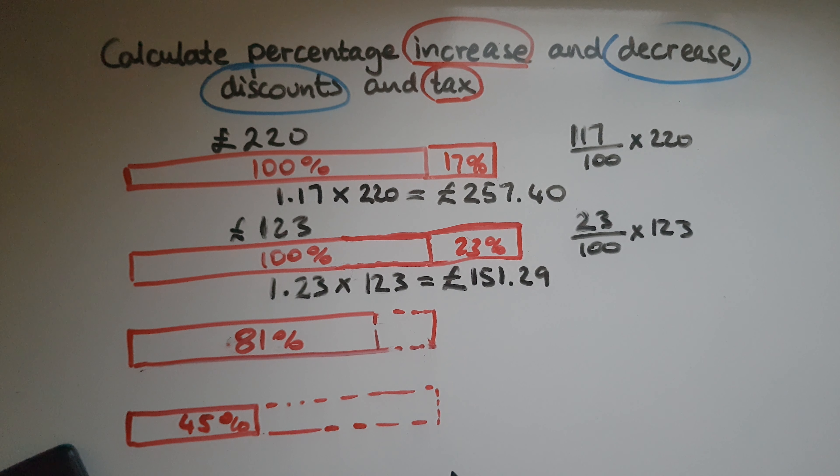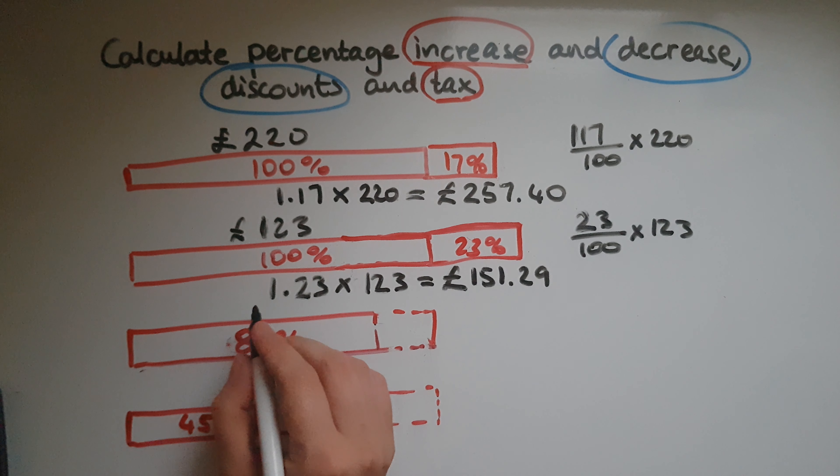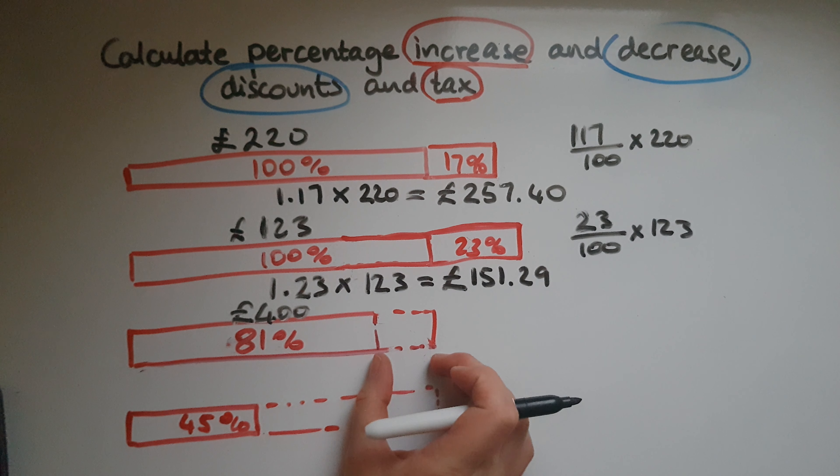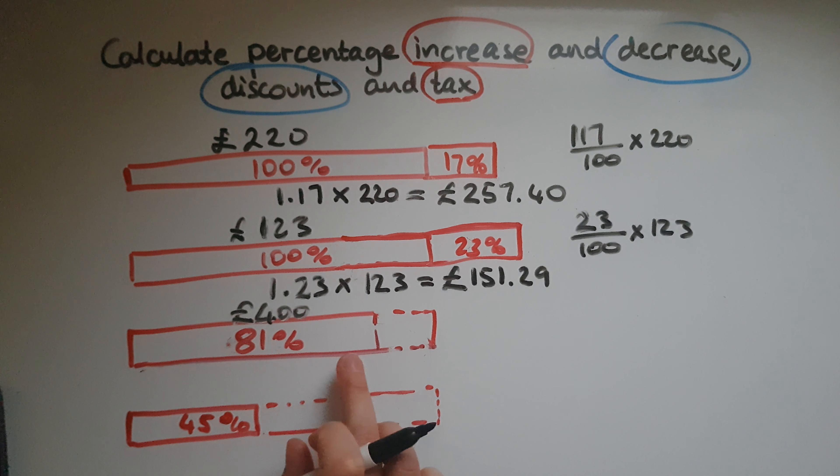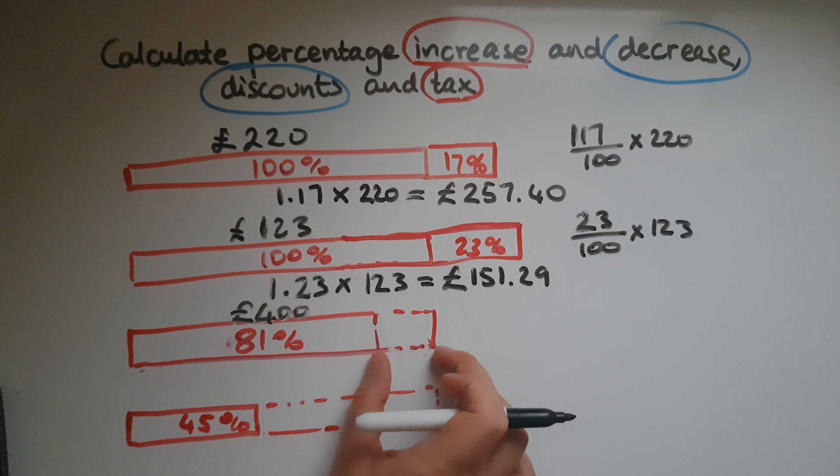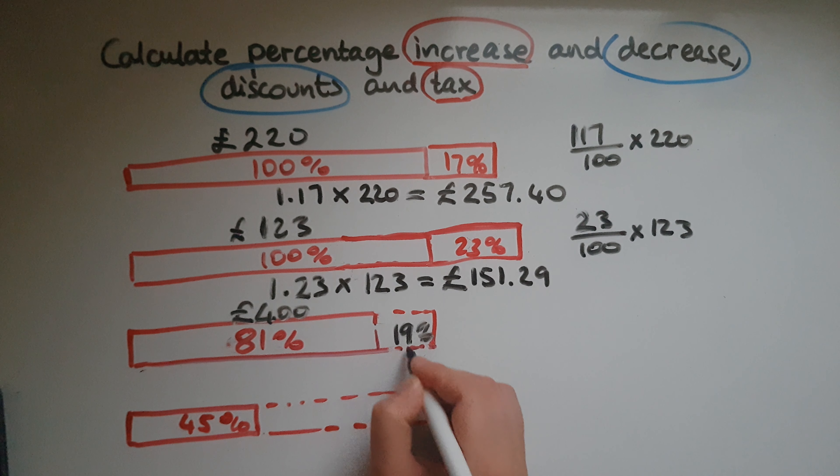Now let's look at decrease and discounts. So we've had an item costing £400. Now there's been a decrease in price. This price was 100%. Now it's been reduced by 19%. How do we know that? Because 81 and 19 makes 100.